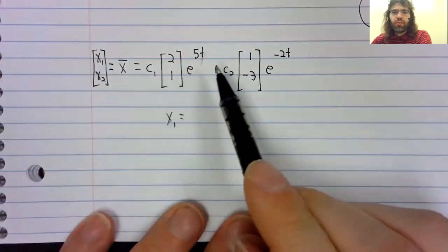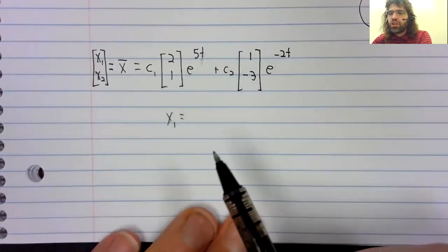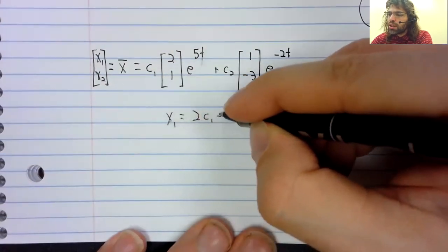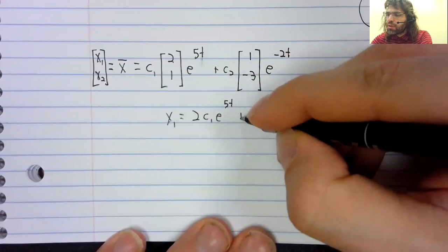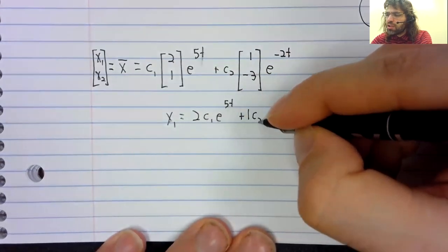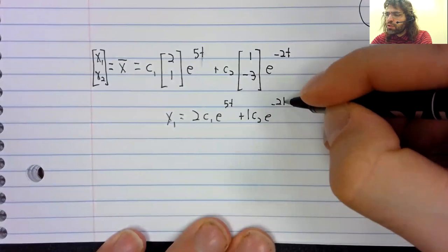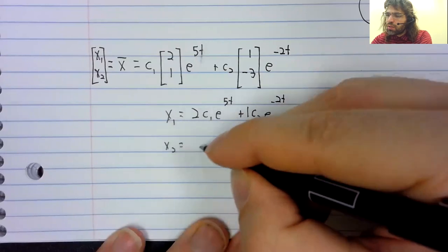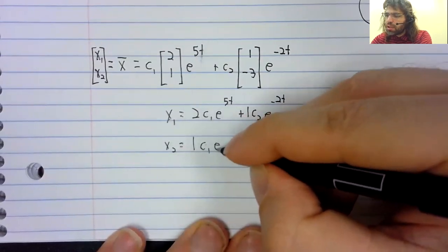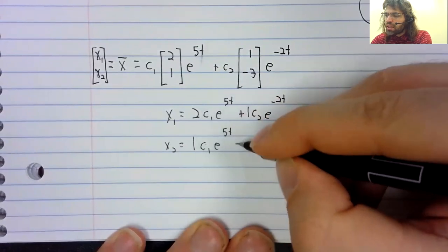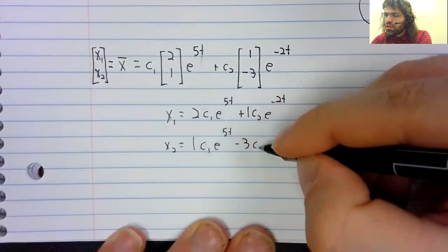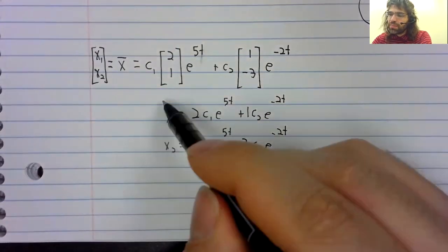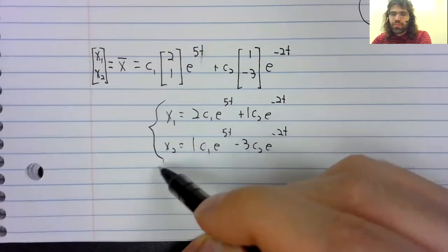If you perform all of this scalar multiplication, you get X one equals two C one e to the five t plus one C two e to the negative two t. And there, written as a system, is our solution to this system of differential equations.